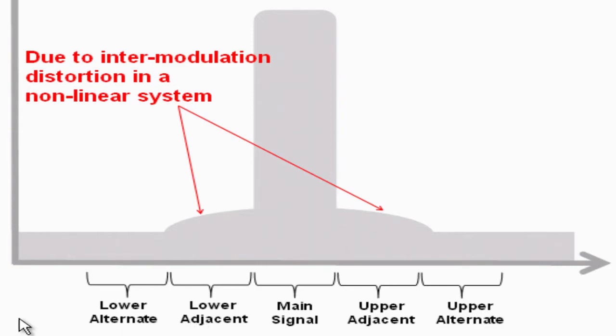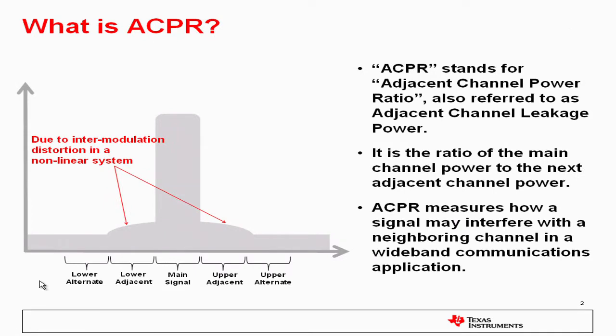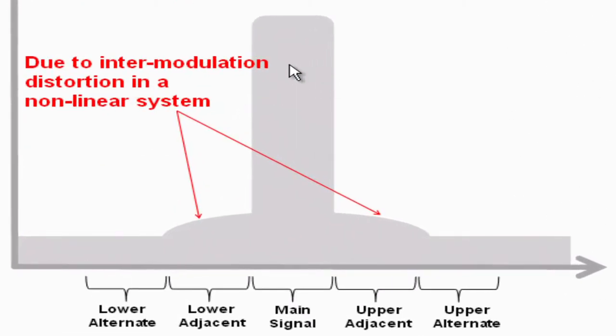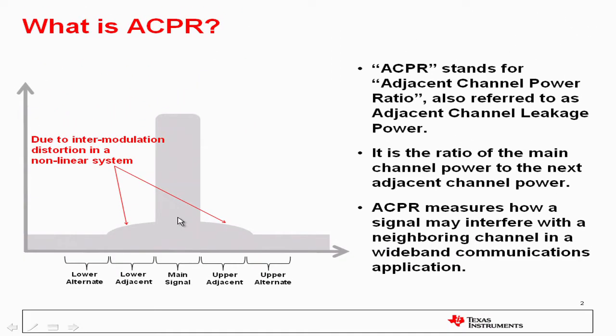ACPR is important because it measures how much a signal might interfere with its neighboring channel in a wideband communications application. So for this example, this is the main signal, and you can see here that some of its power is leaking over to an adjacent channel. So if there was another desired signal here, then the leakage power from this signal would be interfering with the other desired signal.